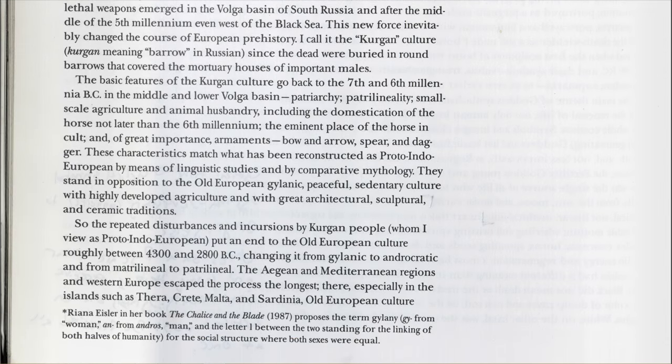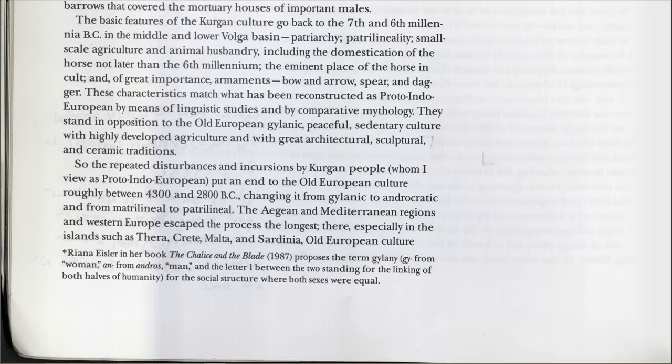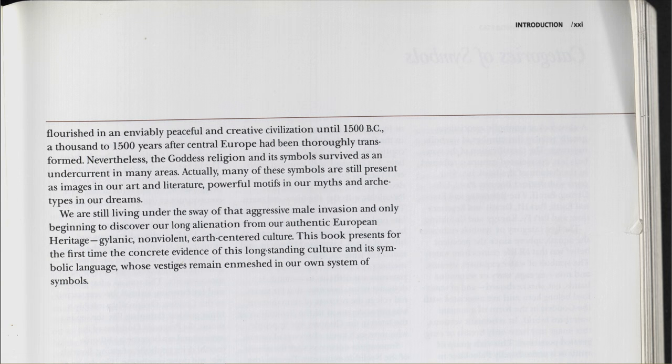These characteristics match what has been reconstructed as Proto-Indo-European by means of linguistic studies and comparative mythology. They stand in opposition to the old European, gilanic, peaceful, sedentary culture with highly developed agriculture and great architectural, sculptural, and ceramic traditions. The repeated disturbances and incursions by Kurgan people, who I view as Proto-Indo-European, put an end to old European culture roughly between 4300 and 2800 BC, changing it from gilanic to androcratic, and from matrilineal to patrilineal. The Aegean, Mediterranean, and Western Europe escaped the process the longest — especially in islands such as Thera, Crete, Malta, and Sardinia, where old European culture flourished until 1500 BC, a thousand to fifteen hundred years after Central Europe had been thoroughly transformed.